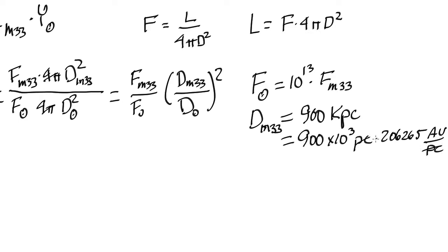So there's 206,265 astronomical units, which is the distance from the Earth to the Sun, per parsec. So that means that this very large number, 900 times 10 to the 3, times 206,265 is the distance to M33 in parsecs. And if you do that calculation, you find it's 1.86 times 10 to the 11 astronomical units.